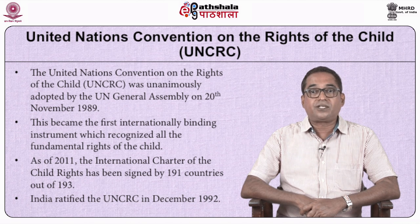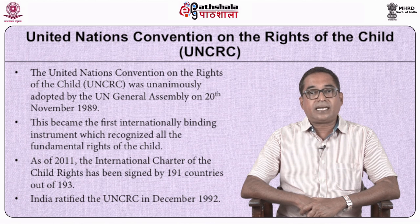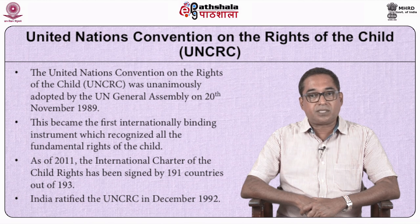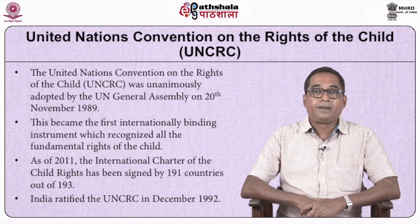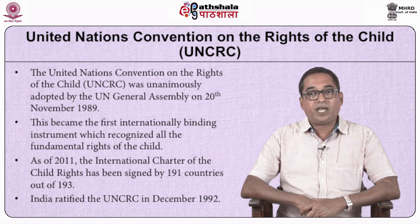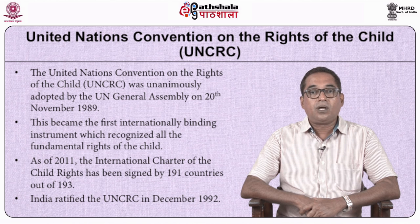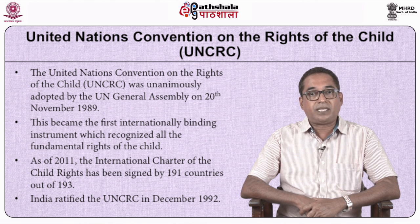United Nations Convention on the Rights of the Child, UNCRC. In 1959, the United Nations General Assembly adopted the Declaration of the Rights of the Child. The DRC describes children's rights in 10 principles. However, this document was not signed by all countries, so these 10 principles only provided an indicative value. The DRC paved the way for the Universal Declaration of Children's Rights, popularly known as the UNCRC, which was unanimously adopted by the UN General Assembly on 20th November 1989.